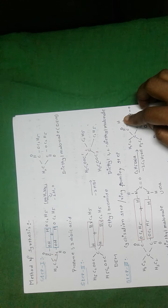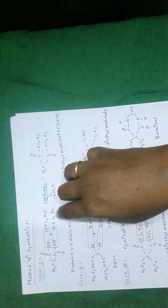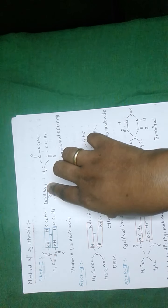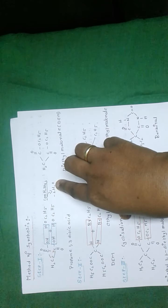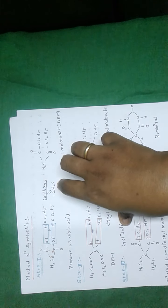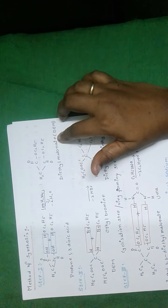Coming to the method of synthesis. By this method we are synthesizing barbital. In this method, five steps are involved. In the first step, propane-1,3-dioic acid (malonic acid) is reacted with two molecules of ethanol in the presence of concentrated H₂SO₄. Propane-1,3-dioic acid contains three carbon atoms with two COOH groups at the first and third positions. The OH and H are eliminated as water — two water molecules are eliminated in this dehydration reaction — and the product formed is diethyl malonate, also called DEM.